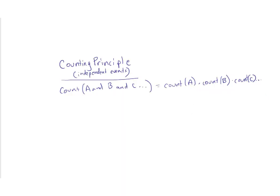Since probability depends on counts, let's spend a little time on counting theories. The exam won't get deeply into combinatorics, but let's learn some basics. We begin with the counting principle: if events are independent, the number of ways to count event A, B, and C all occurring together is simply the product of each of the individual counts — similar to our probability rules where P(A and B) equals P(A) times P(B).